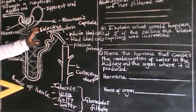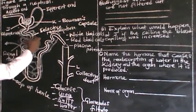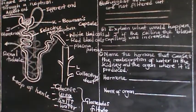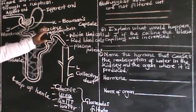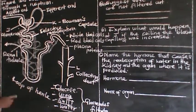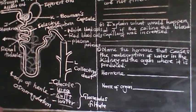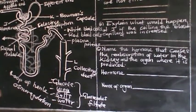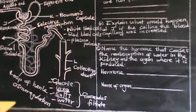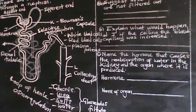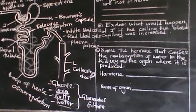There is also another process which takes place in the loop of Henle, which we call tubular secretion. Let me not spend too much time on things which are not directly part of the exam questions — I'll come back to those.